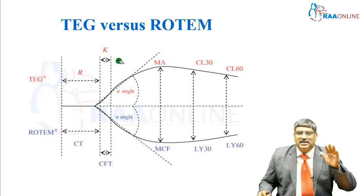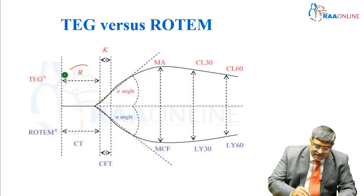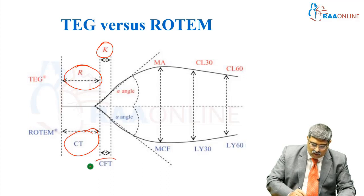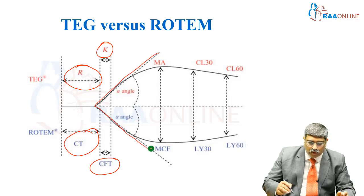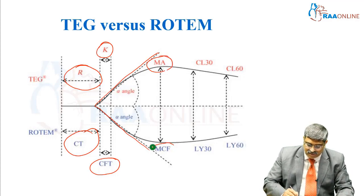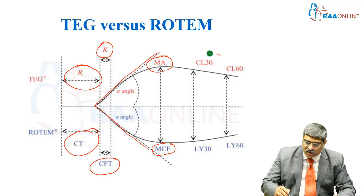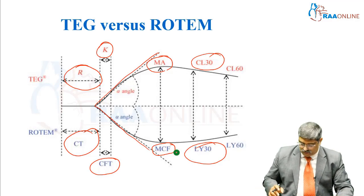Coming to the various parameters of TEG and ROTEM: in TEG it is reaction time, whereas in ROTEM it is clotting time. Kinetics time in TEG, whereas clot formation time in ROTEM. You have the alpha angle, which is same for both TEG and ROTEM, and maximum amplitude in TEG, whereas maximal clot firmness in ROTEM. And you have clot lysis 30 and 60 in TEG, and lysis index 30 and 60 in ROTEM.